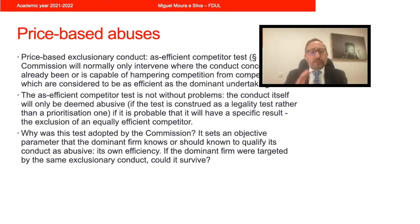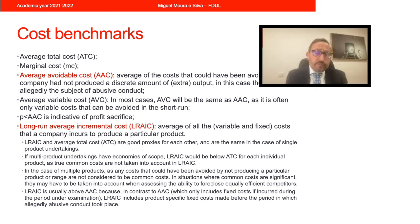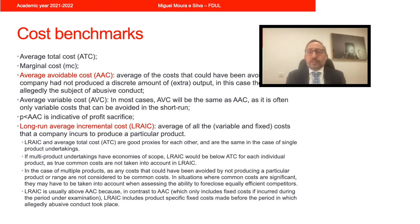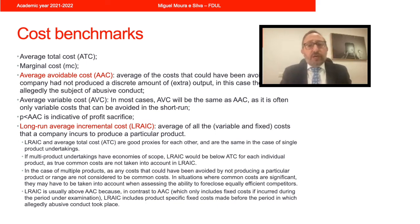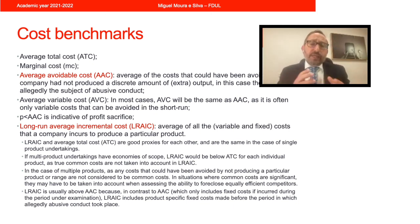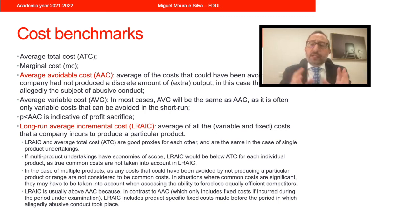Now just a final note on concepts of cost. The European Court of Justice, particularly in the AKZO case which is a predatory pricing case, uses the concepts of average total cost and marginal cost. Average total cost means that for a given output you take into account all costs and divide by the number of units produced. Marginal cost measures the cost of producing an additional unit. The European Commission in its 2009 guidance replaces these two concepts with the average avoidable cost and the long-run average incremental cost.